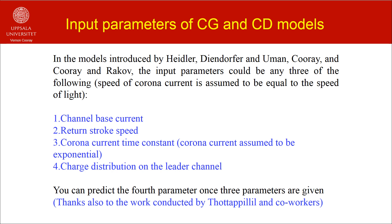While looking at the concepts of current generation and current dissipation models, you may have noticed that the input parameters of these models could be: first, channel base current; second, return stroke speed; third, corona current decay time constants; and fourth, the charge distribution along the return stroke channel. Actually, you need only three of these parameters in constructing the model — the model will predict the fourth parameter. For example, if you assume the channel base current, charge distribution along the return stroke channel, and corona current decay time constants as input parameters, then the model can be used to predict the return stroke speed.